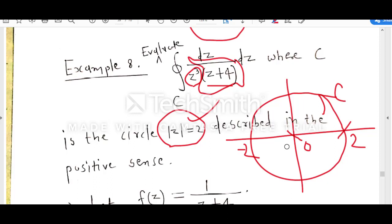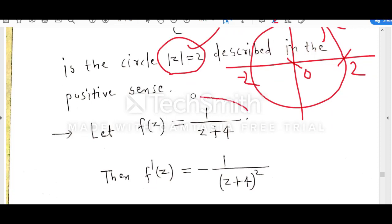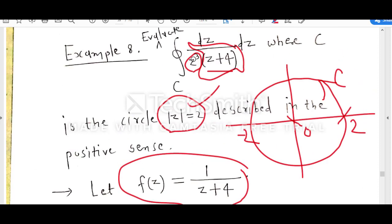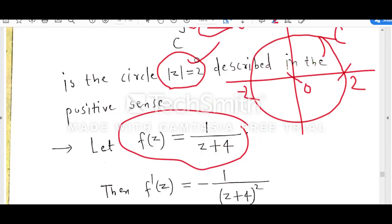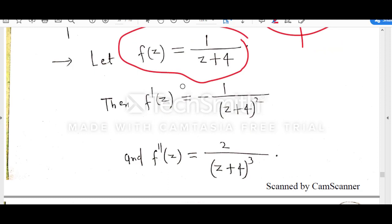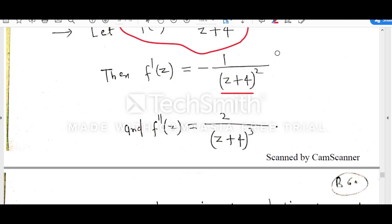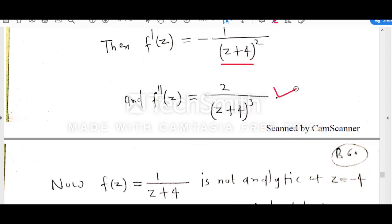z equal to 0 is inside this simple closed contour C. Comparing with f(z) upon z minus z₀, we consider f(z) equal to 1 upon z plus 4 and z₀ equal to 0. Because the power of z is 3, we have to go up to the second derivative. So f(z) is 1 upon z plus 4. The first derivative is minus 1 upon z plus 4 squared. The second derivative is minus 1 times minus 2 upon z plus 4 to the power 3, which gives 2 upon z plus 4 cubed.